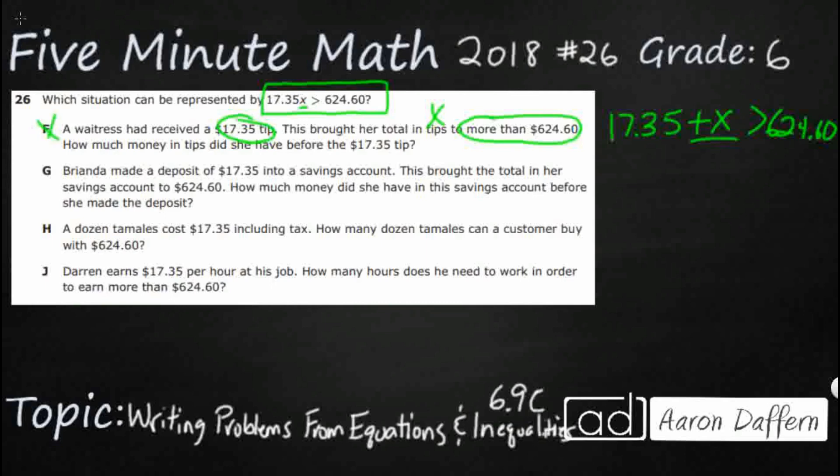Let's look at G. Brianda made a deposit of 17.35 into a savings account. This brought her total to 624.60. These two are pretty easy to eliminate. We're going to do 17.35, and it's the same problem as we had before. This brought her total to 624.60. We're going to add the x because that x is how much money she had before, but instead of the greater than, it's simply going to be equal to. We have the wrong inequality and we have the wrong operation. 17.35 plus x, because we're just adding that 17.35 plus whatever she had before, that now makes it equal to that 624.60. That is wrong on two accounts. It's got the addition and it doesn't have a greater than, it's got an equal.